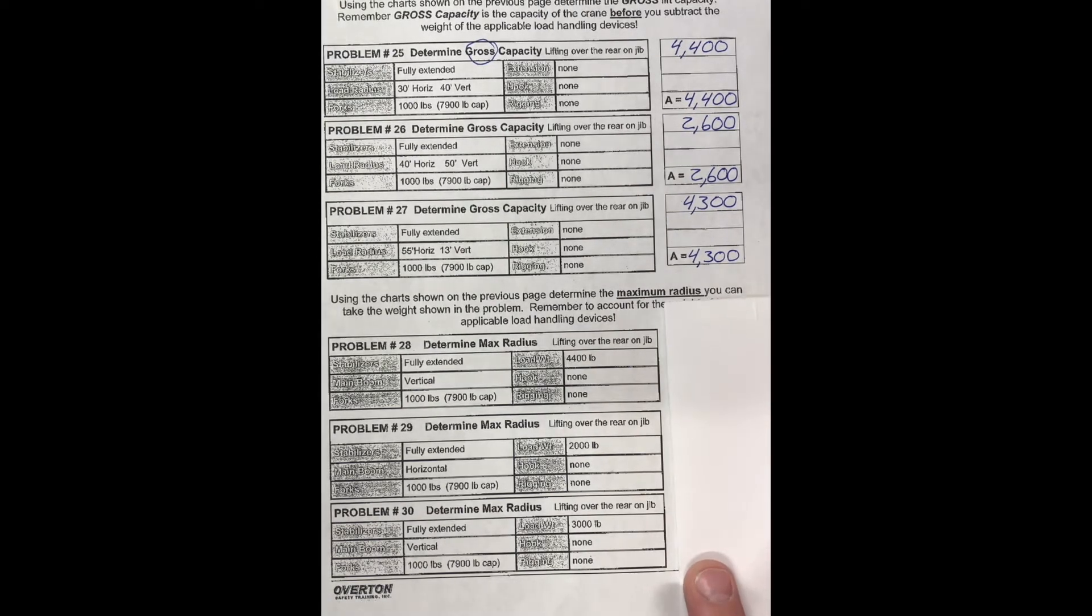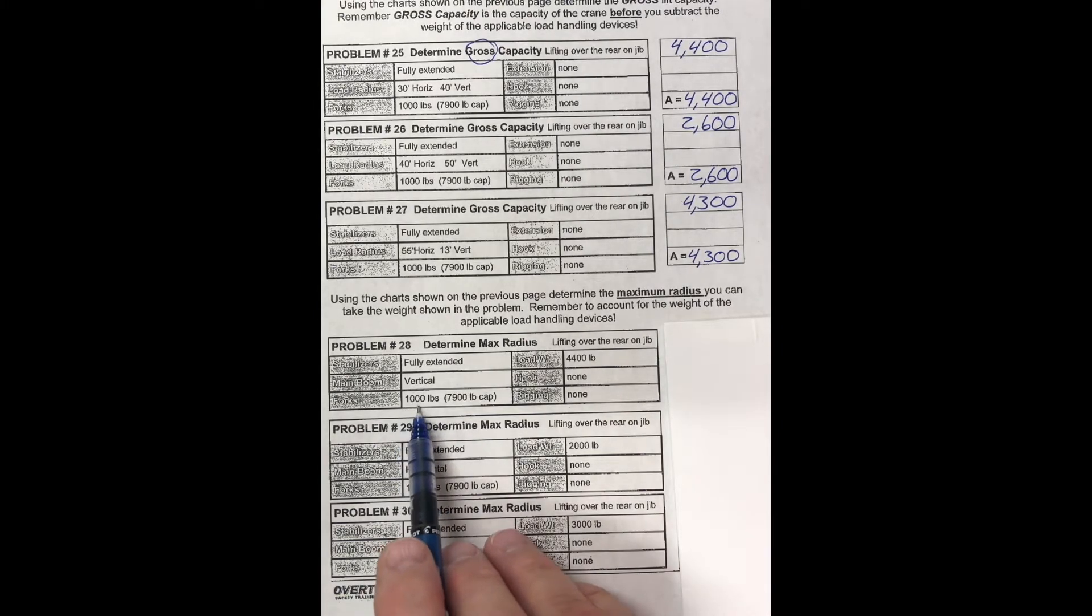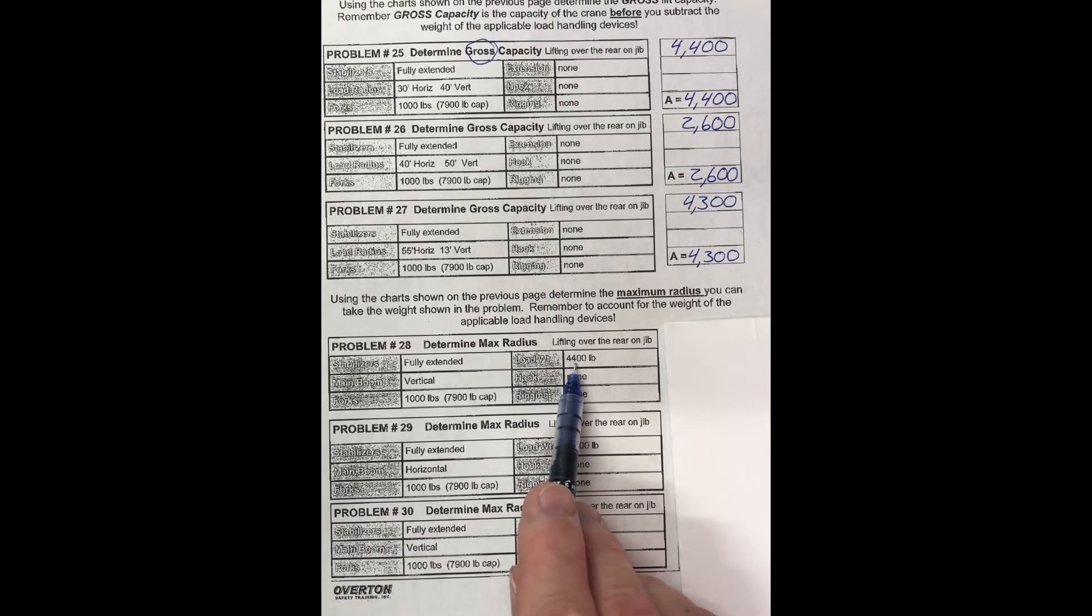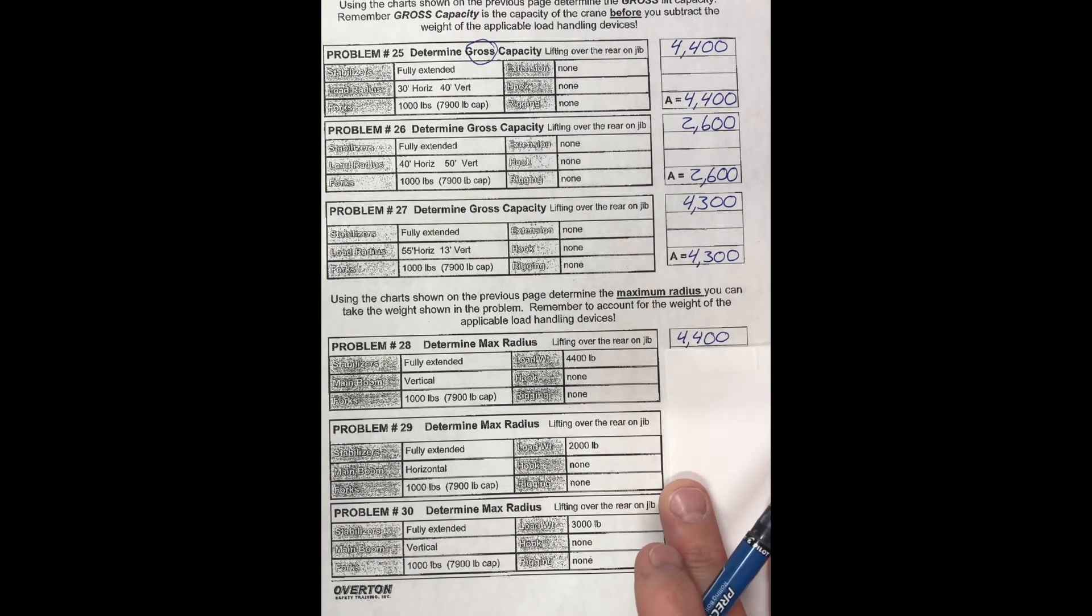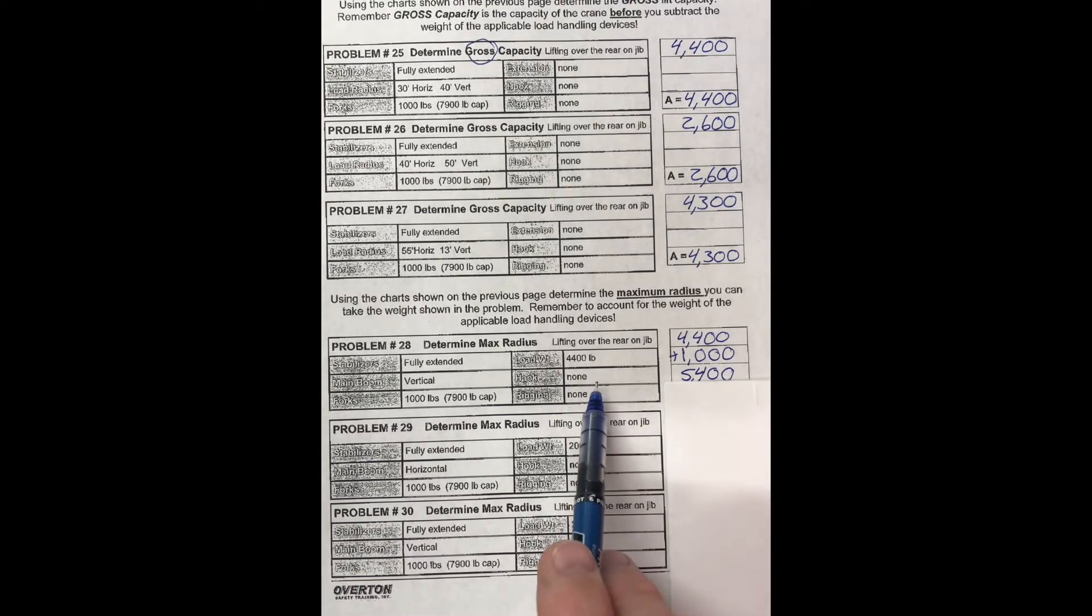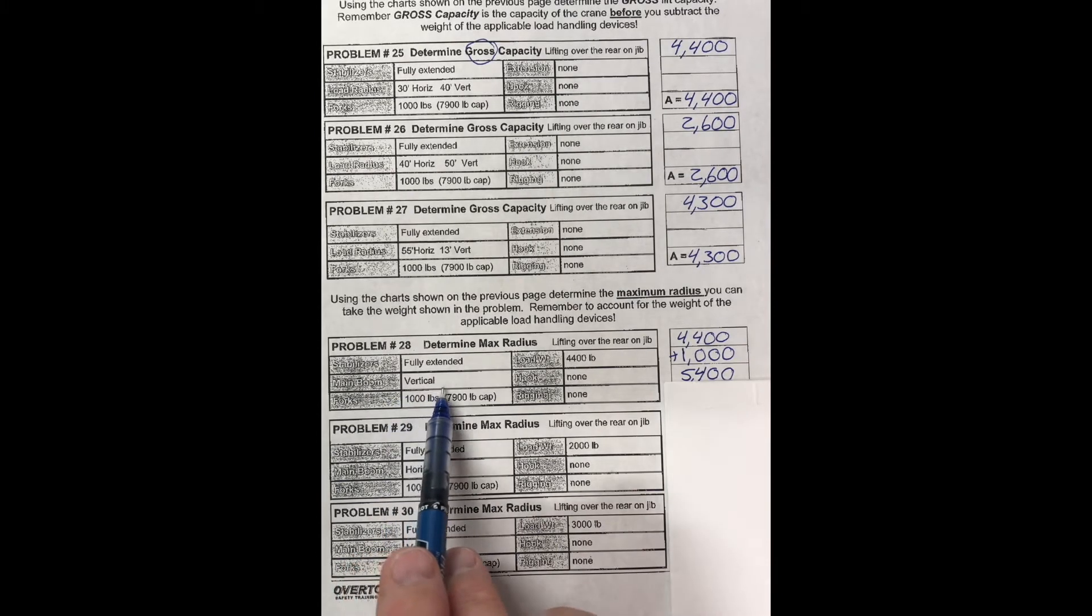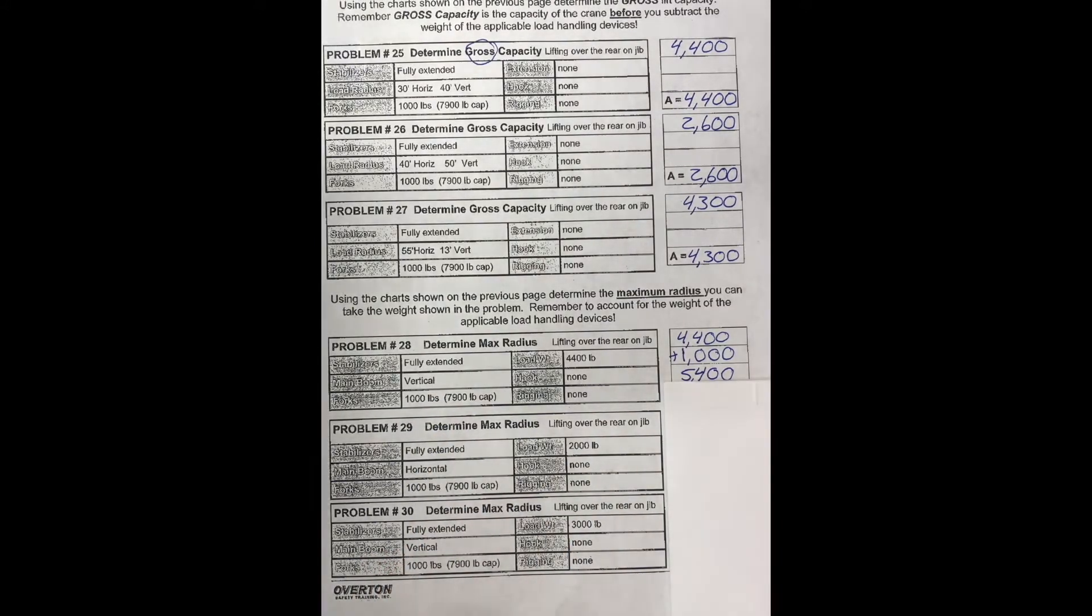Next we've got max radiuses. We're going to need to know what our gross load is. We've got forks that weigh 1,000 pounds and 4,400 pounds is our load. So we've got 4,400 pounds, then we've got our 1,000 pounds for forks. Add those together, 5,400 pounds. The other thing you need to watch here is it says vertical. It's telling you what direction it's going to be going, how the weight is going to go. Whether it's going to be horizontal or vertical. So it's going vertical. It's going up 5,400 pounds.